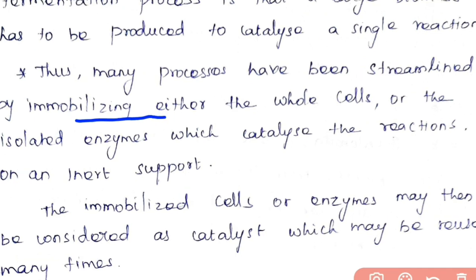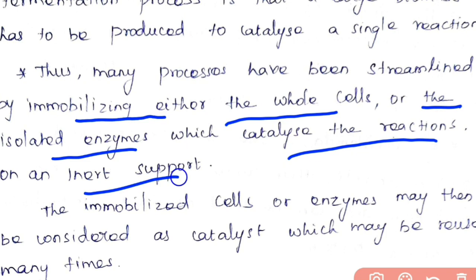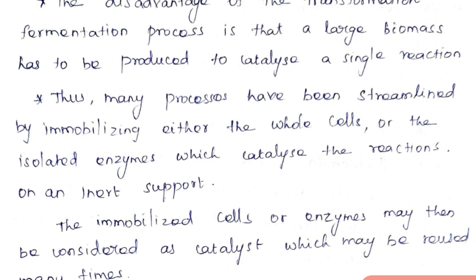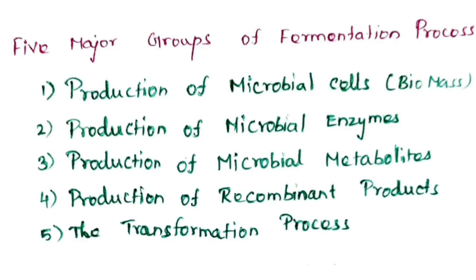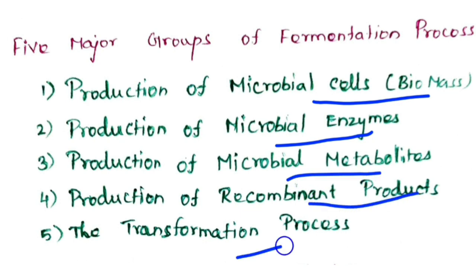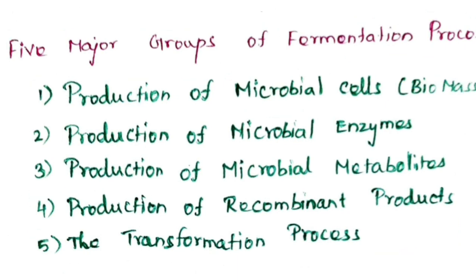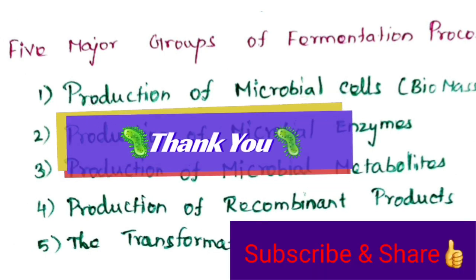To summarize, we can immobilize either whole cells or isolated enzymes to act as reusable catalysts. The five major groups of fermentation products are: microbial cells or biomass, microbial enzymes, microbial metabolites, recombinant products, and products from the transformation process. In upcoming videos, we will see more about fermentation processes. Thank you for watching — please subscribe and share if you like the videos.